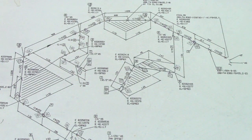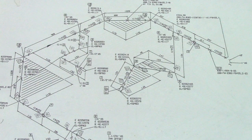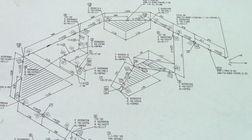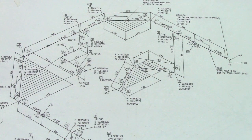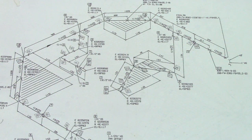Hi guys, welcome back to Piping Welding and Duty channel. This is an isometric drawing and I will show you how to determine all the shadowing here in isometric drawing. We can see we have a lot of shadowing on this isometric drawing, so how do you determine if this is a vertical or horizontal shadow?